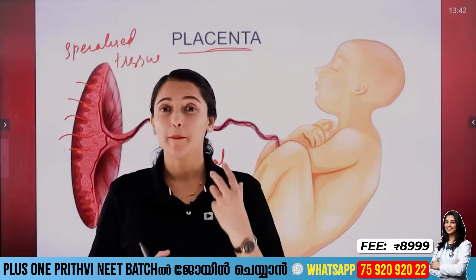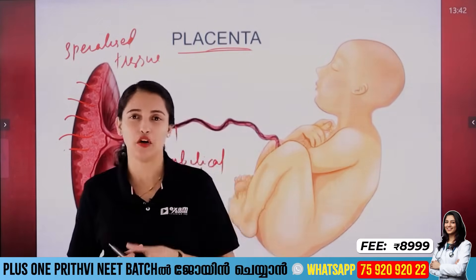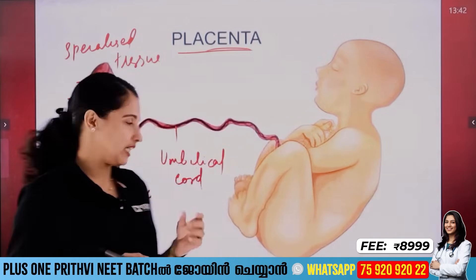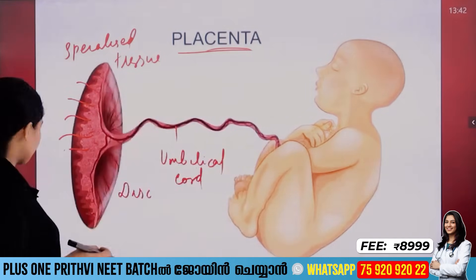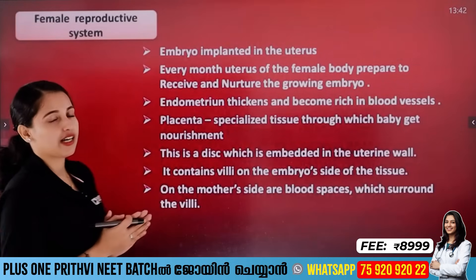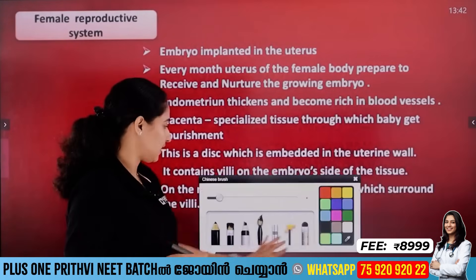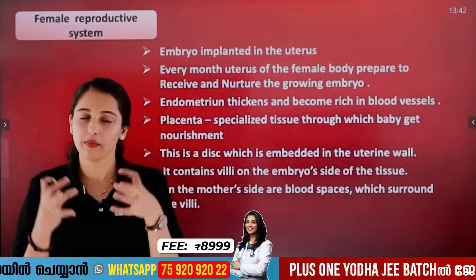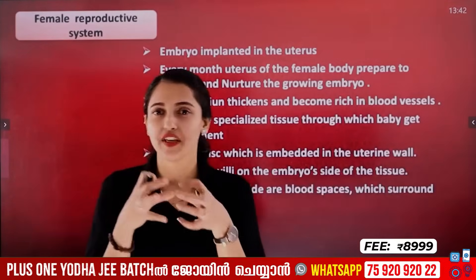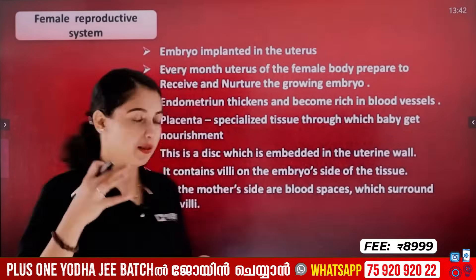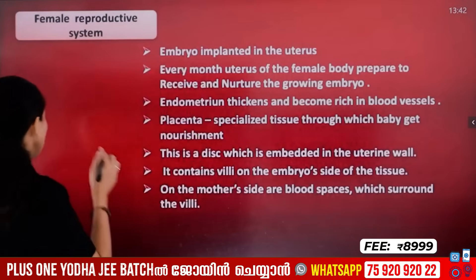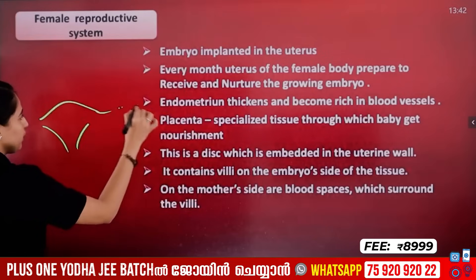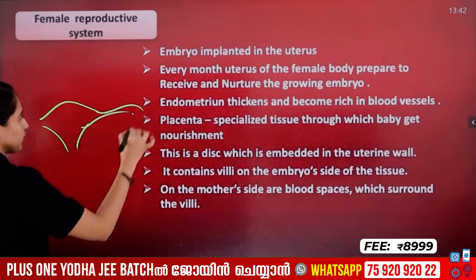So how does this placenta form? We have to use fertilization — the union of male gamete and female gamete. Fertilization involves the uterus structure.